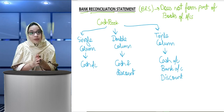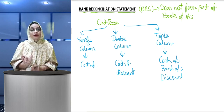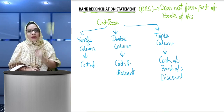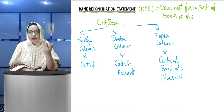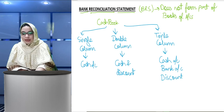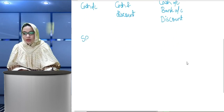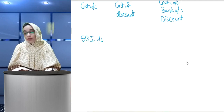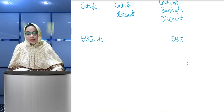So what this means is: you are maintaining a bank account in your books, and similarly your bank, in its own books, also maintains your account. For example, if our account is in SBI, then we open SBI's bank account in our books and make entries there. And in SBI's books, our account — say 'Zainab Enterprise' — is also maintained.